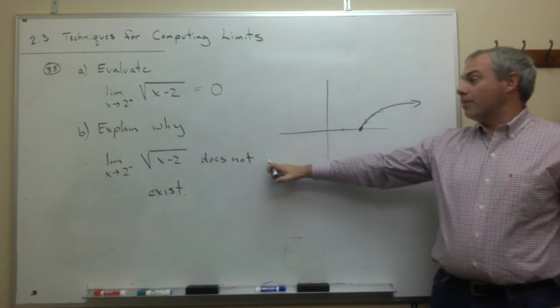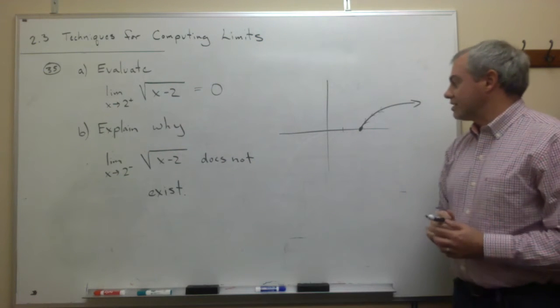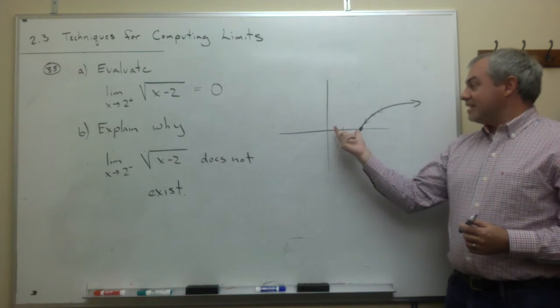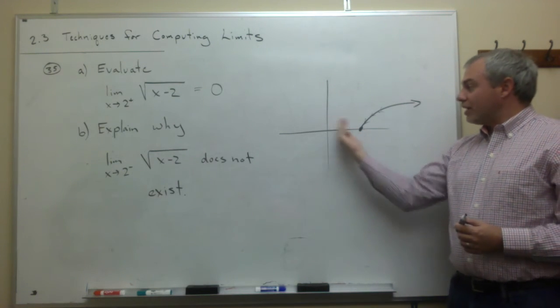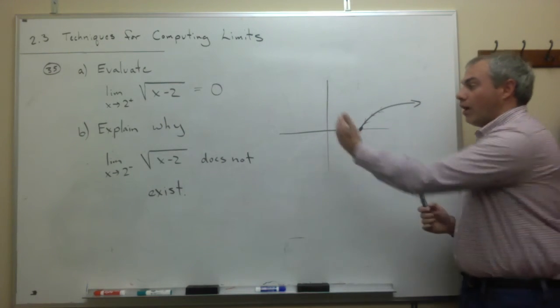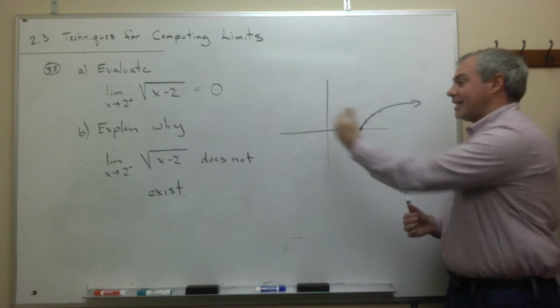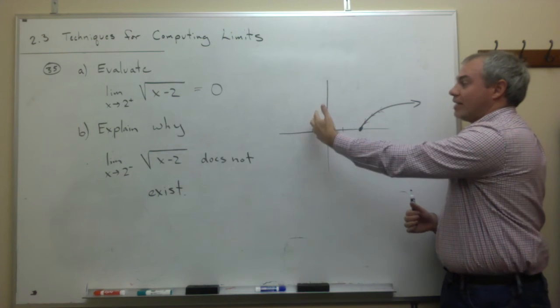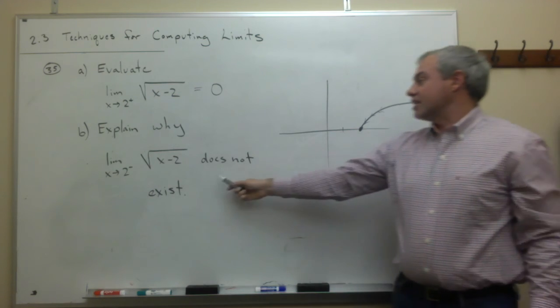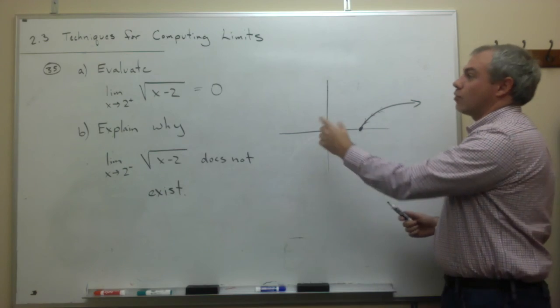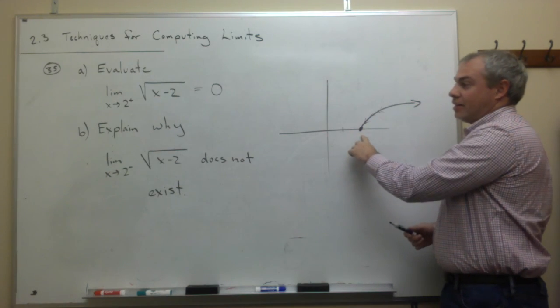And now the question in part b is, well, let's explain why the limit as x goes to 2 from the left of this square root doesn't exist. Well, is there any function over on the left-hand side of 2? There is no function over here to look at and say, what is the function getting close to as I come from the left? There is no function from the left. So I can't have a limit from the left when I don't have functional values on the left side of 2. So the reason this doesn't exist is that the function square root x minus 2 doesn't exist on the left side of x equals 2.